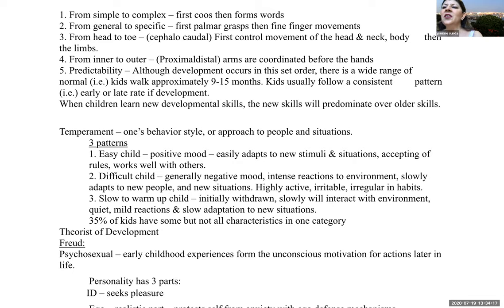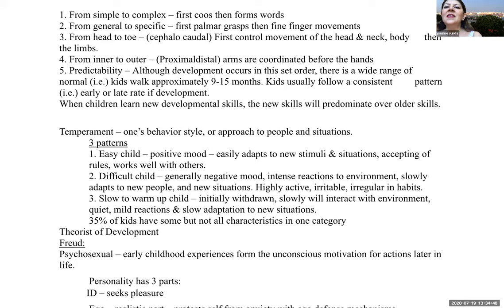Predictability: although development occurs in a set order, there is a wide range of normal. Children can walk as early as nine months and as late as 15 months and this is considered normal. Children follow a consistent pattern — a child who develops early tends to stay with that pattern, and one developing late, though still within the normal range, may tend to stay at a late rate. When children learn new developmental skills, the new skill will predominate over older ones.